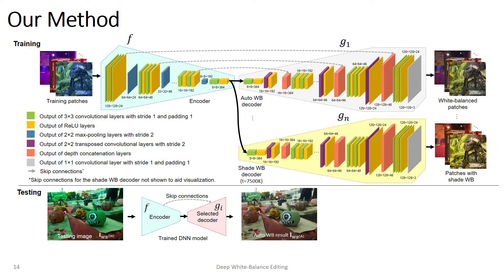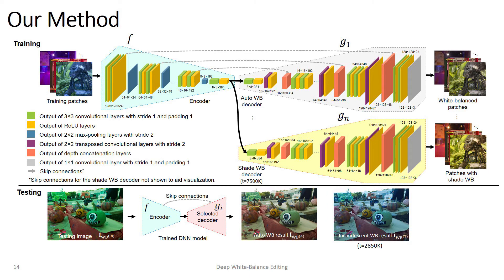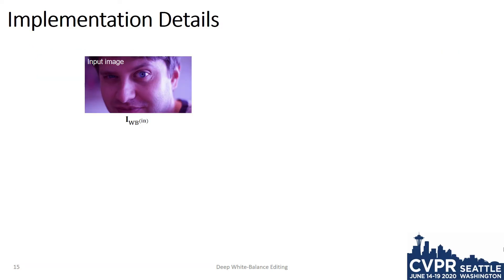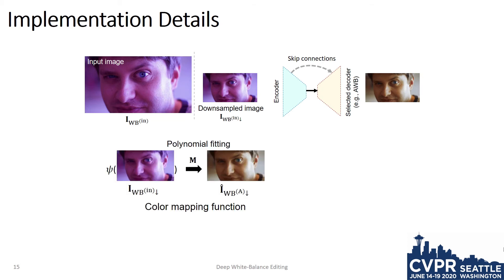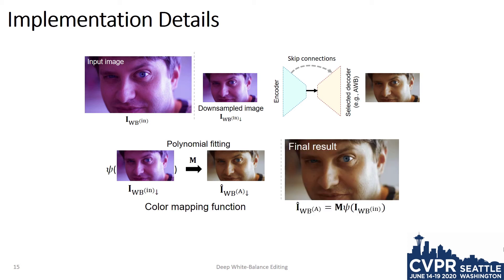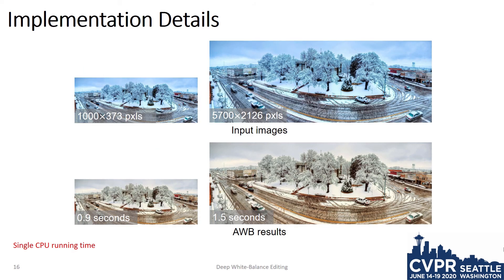Here we show the image processed with decoders for auto white balance, incandescent white balance, and shade white balance. At testing time, we use the following implementation: the input image is downsampled to a maximum resolution of 656 pixels in either dimension. We apply our DNN on this downsampled image to get a small output image with the new white balance setting. We then construct a polynomial color mapping function between the two downsampled input and output images, and apply this mapping to the full-sized image to get the final full-sized output.